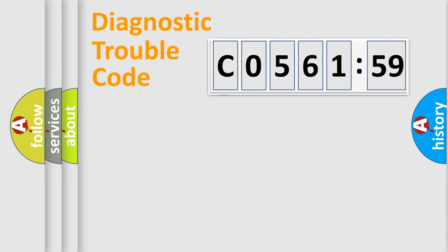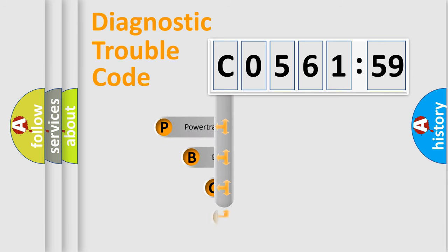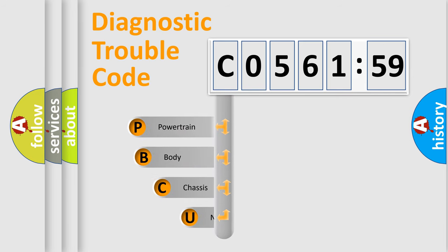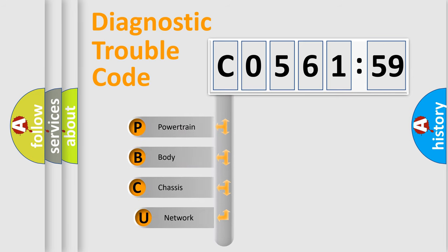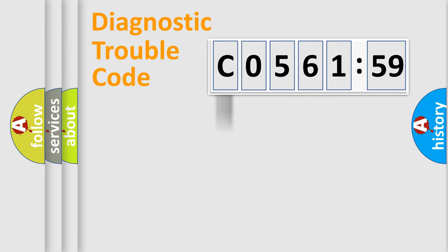Let's do this. First, let's look at the history of diagnostic fault code composition according to the OBD2 protocol, which is unified for all automakers since 2000. We divide the electric system of an automobile into four basic units: Powertrain, Body, Chassis, and Network.